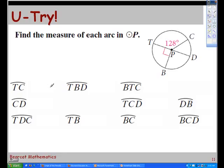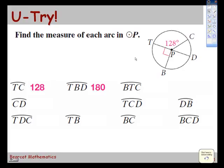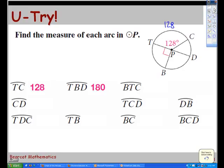So the first thing we're supposed to find is TC. How big is TC? 128. Let's verify that. So we had TC at 128. Do you agree that TBD is 180? If this is 90, how big is TB? 90.